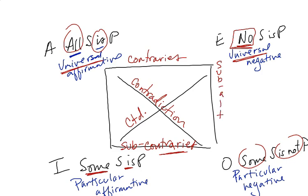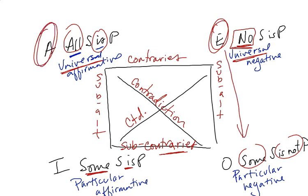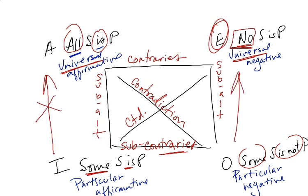And the rule, again, for subalternate is that if the universal is true, then the particular is also true. But, what we can't do is go from a particular to a universal. That is always going to be a mistake. Okay, so if the universal is true, the particular is true, but not the reverse. Alright, so that's some reviewing.